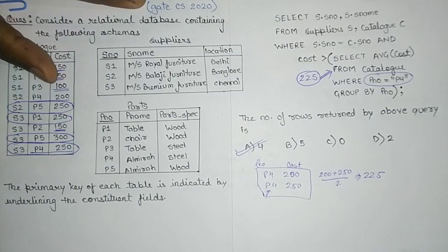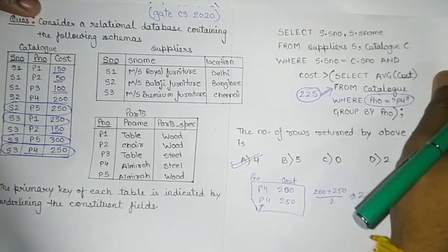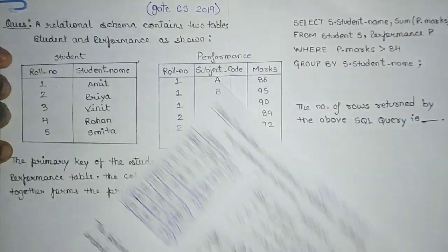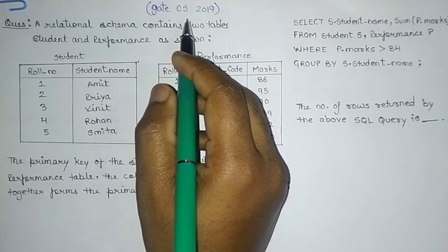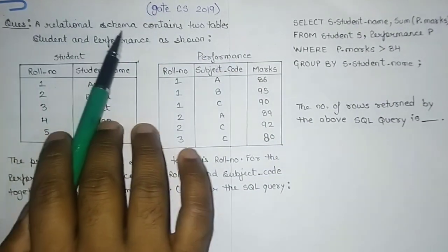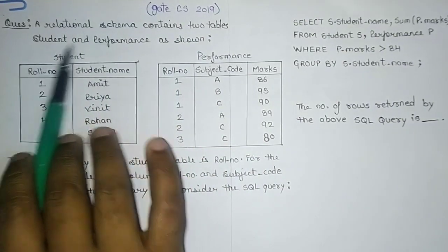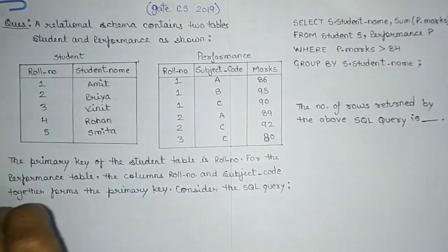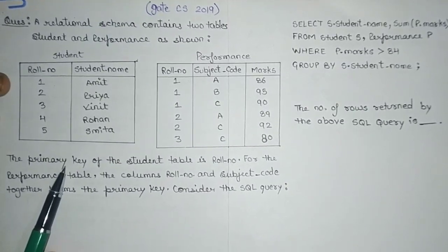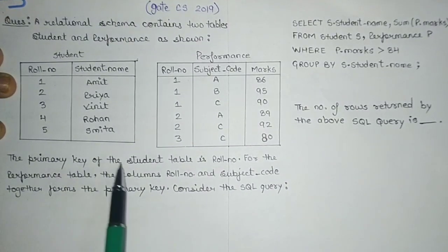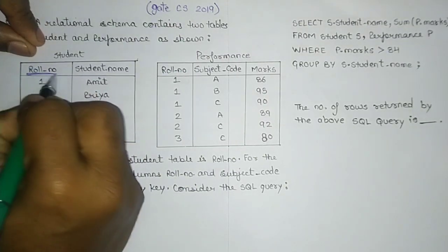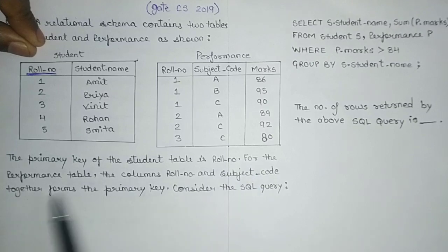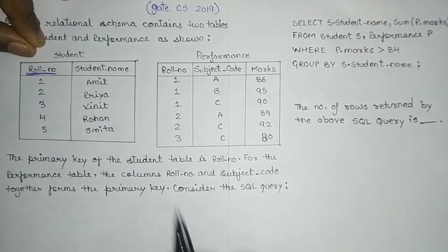Now let's discuss another question from GATE 2019. A relational schema contains two tables: student and performance. The primary key of the student table is role number. For the performance table, the columns role number and subject code together form the primary key. We are given a query and need to find the number of rows returned — this is a numerical data type question.